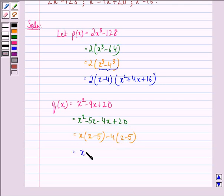Now, this is equal to (x minus 5) times (x minus 4), where we have taken the common factors from these terms.